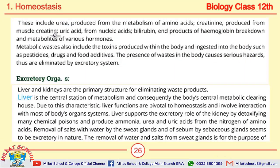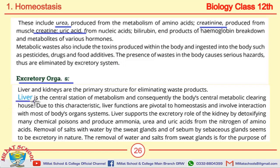Some of the metabolic waste products in humans include urea, creatinine, creatine, and uric acid. These are some of the excretory products in humans. The first important excretory organ is the liver.